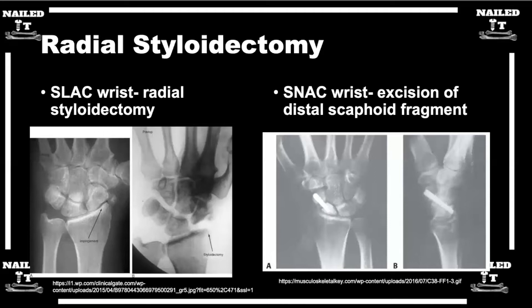In the next year or two, you may be having another conversation about why you didn't do more. So for stage one SLAC wrists where the pathology is mostly at the radial styloid and scaphoid, when doing ligament reconstruction after styloidectomy, are you using anchors or a specific system? That's the million-dollar question.